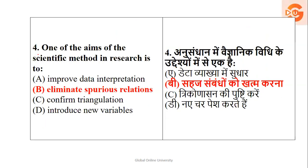Question 4: One of the aims of the scientific method in research is — to improve data interpretation? No. To eliminate spurious relations — ambiguous or unimportant ones — yes. Confirm triangulation? Introduce new variables? No. The main aim of scientific research is to identify which relations are spurious and remove them. Option B is the right answer.